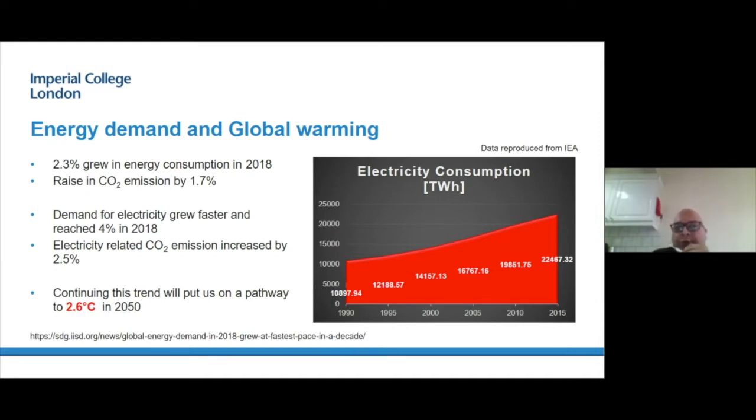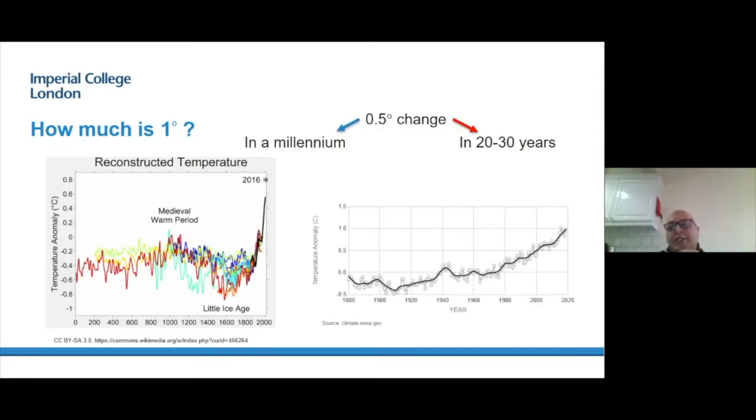Looking at the energy demand, according to International Energy Agency, we had 2.3% growth in energy consumption just in 2018. The demand for electricity grew even faster, reached 4% in 2018, and that contributed 2.5% to CO2 emission. Continuing this trend would put us on 2.6 degrees or beyond in 2050. We should appreciate that these kind of changes, if it happens naturally, would be over a time period of a millennium, but we're doing these in 20-30 years.